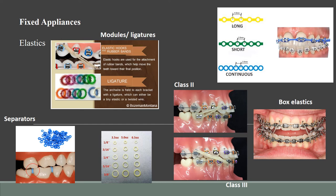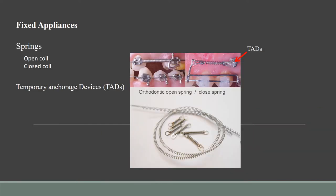Box elastics are another example of an elastic used by a patient at home, wherein they have to wear them in the prescribed fashion to close anterior open bite, pull teeth together, and improve the bite. The next component we use are springs, which can be open or closed. They have different functions — whether to close the space or open the space — depending on different configurations. You can also see a TAD being placed, and these TADs are usually made of nickel titanium, are biocompatible, and provide additional anchorage.